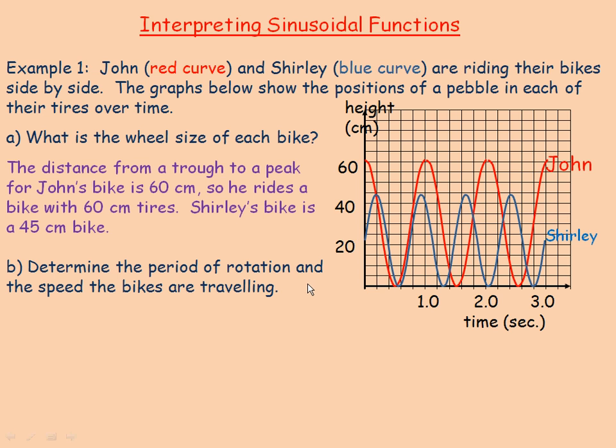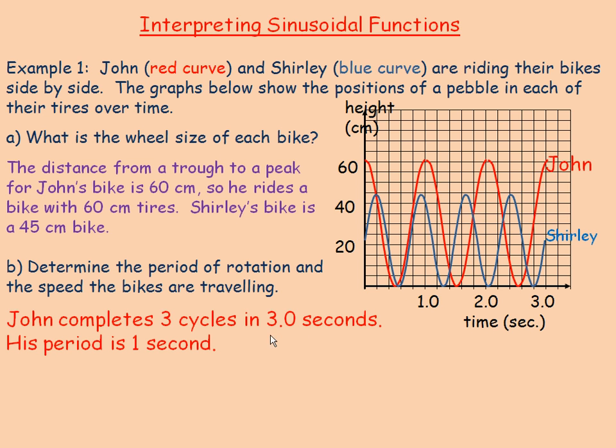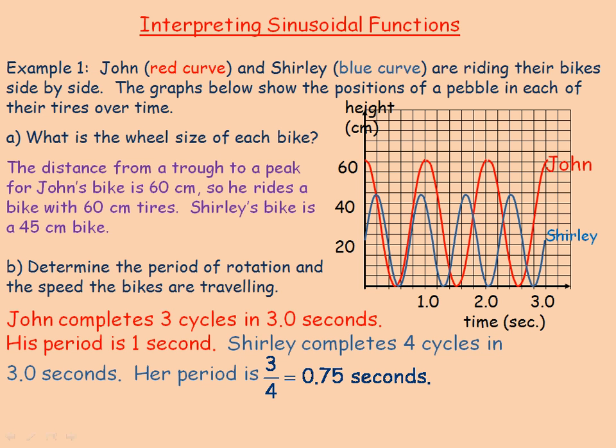In part B, we're asked to determine the period of rotation and the speed the bikes are traveling. Notice that John completes three cycles in three seconds, so the length of his period is one second. Shirley completes four cycles in three seconds, so to determine the length of the period of her graph, we take the three seconds and divide it by the four cycles, and the length of each of her cycles is 0.75 seconds.